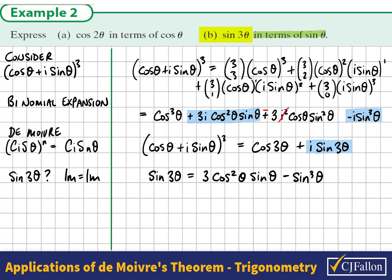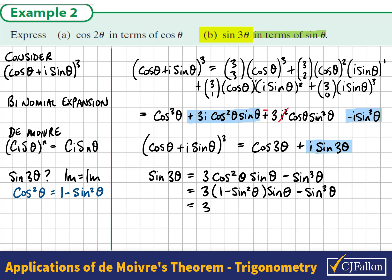We want our expression in terms of sinθ only, and we have a cos²θ here that we don't want. But we know that cos²θ equals 1 minus sin²θ, so we replace cos²θ with this expression. Expanding, we multiply 3sinθ by 1 and 3sinθ by negative sin²θ. Collecting like sinθ terms, the final answer is sin3θ equals 3sinθ minus 4sin³θ.